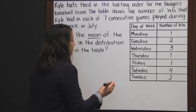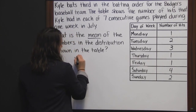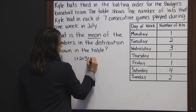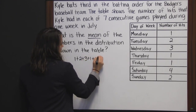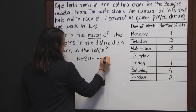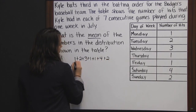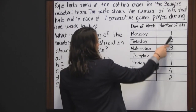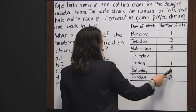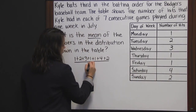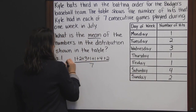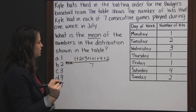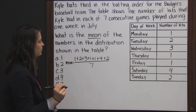So first we'll add all the numbers together: 1 plus 2 plus 3 plus 1 plus 1 plus 4 plus 2. Then we divide by the number of numbers there are, which is 1, 2, 3, 4, 5, 6, 7. So we divide by 7. And again, this is how we find the mean: add the numbers together, and then divide by the number of numbers there are.